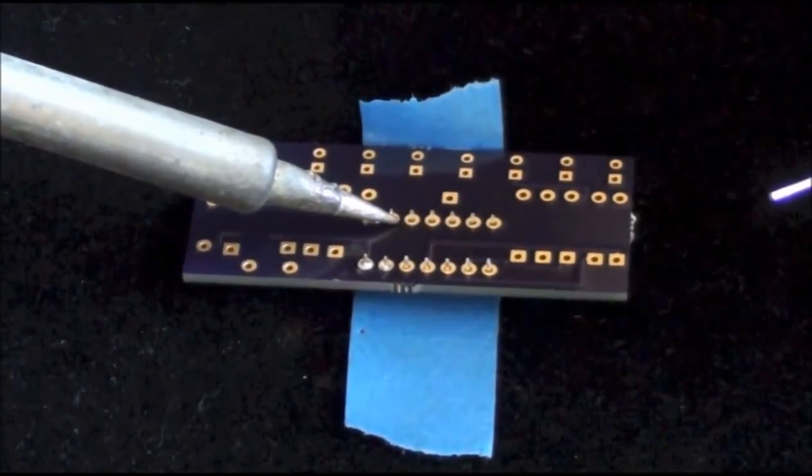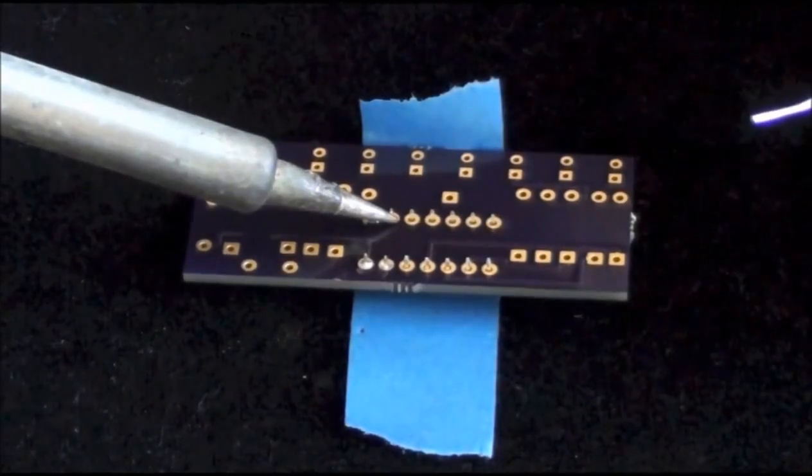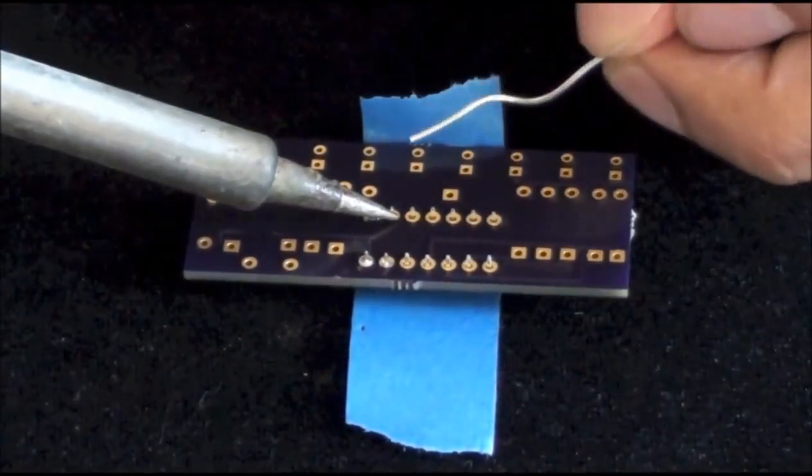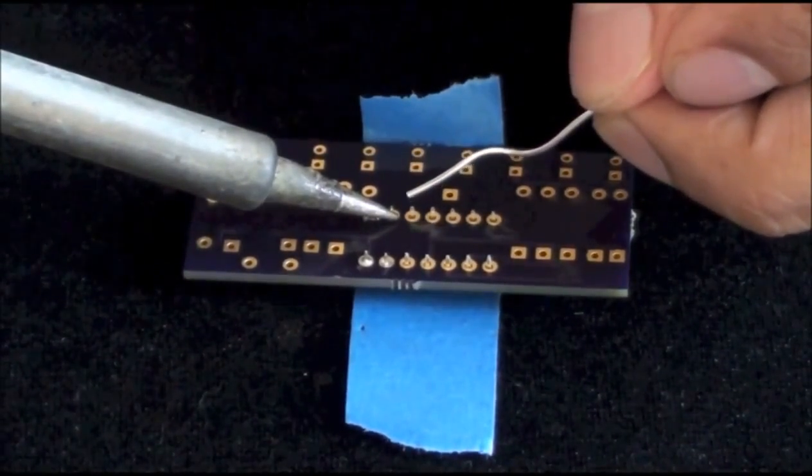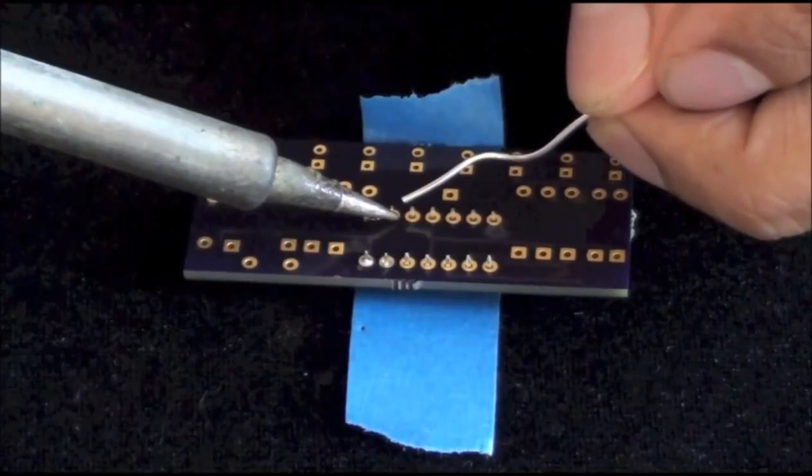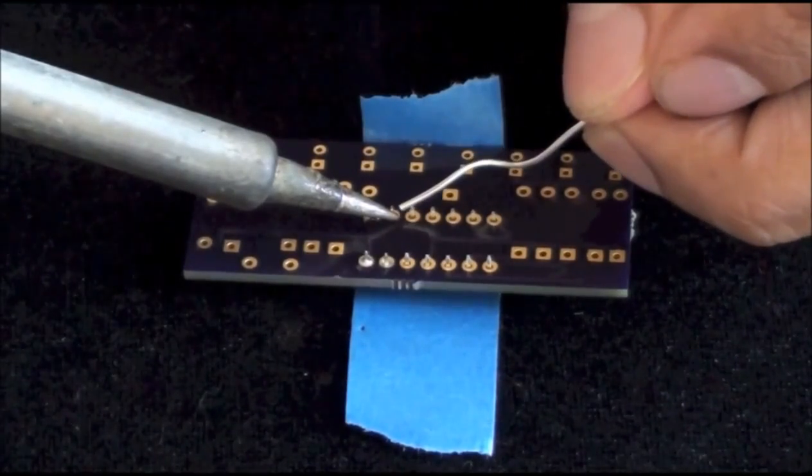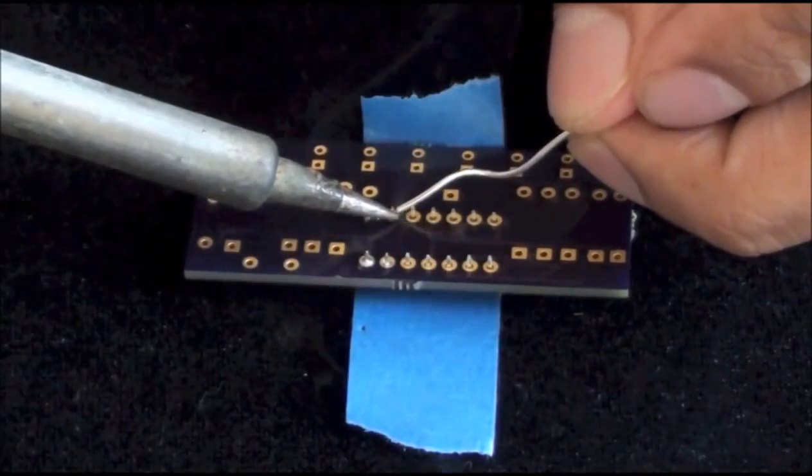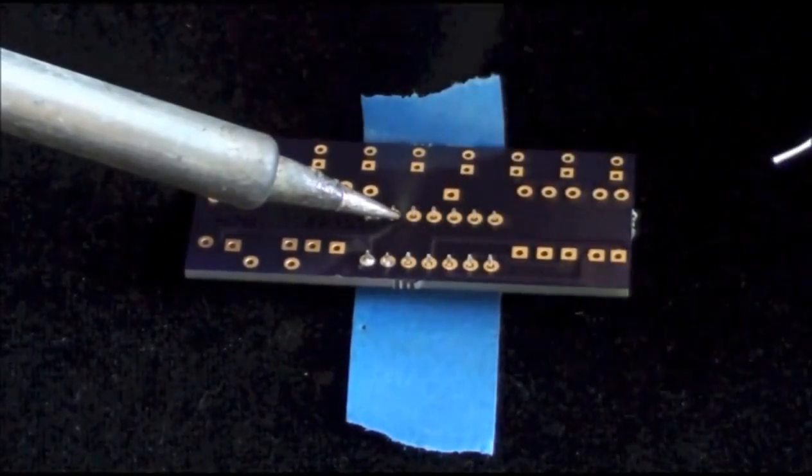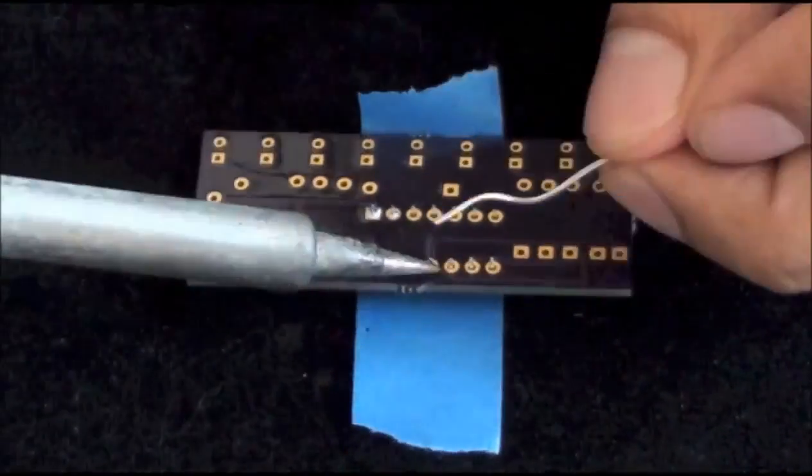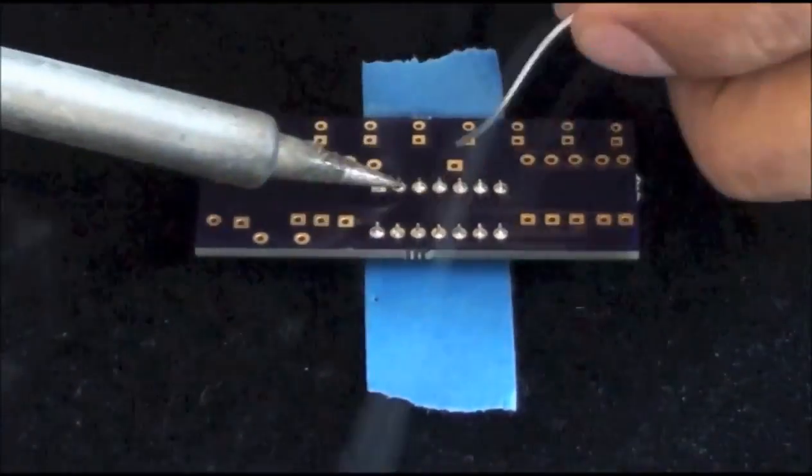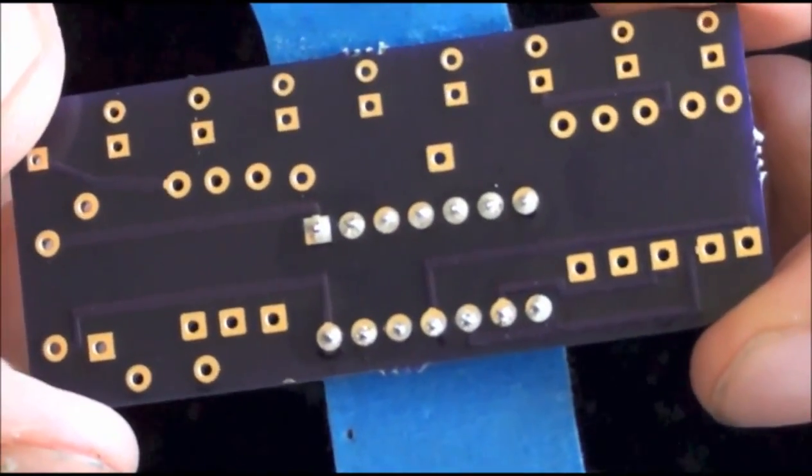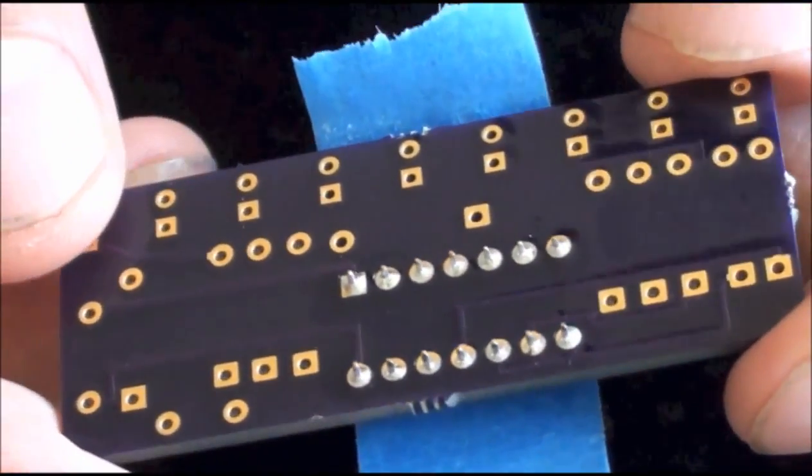Again, we will place the solder gun down first, wait a moment and then add the solder wire. Then remember to lift the wire first and then the gun. This is how the completed solder process should look.